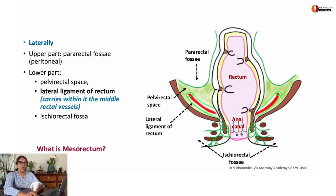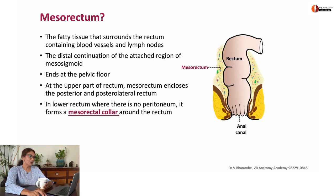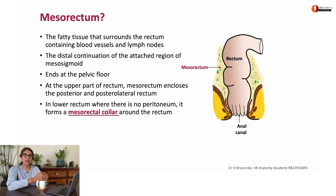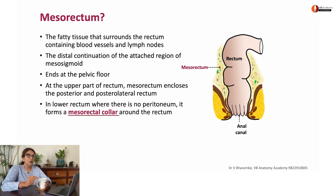What is mesorectum? Mesorectum is not truly a mesentery of the rectum, because the rectum does not have a mesentery. Rather it is a fatty tissue that surrounds the rectum, containing blood vessels and lymph nodes. It is a distal continuation of the tissue of the mesosigmoid, and it ends at the level of the pelvic floor. In the upper part it encloses the rectum from the sides and front; in the lower part it forms a collar of connective tissue completely surrounding the rectum. This term is used by surgeons for dissection in the region around the rectum — dissection in the mesorectum.